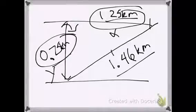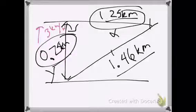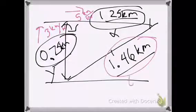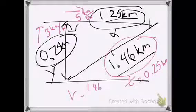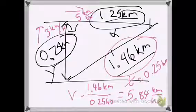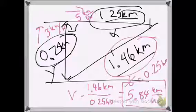Now let's look at speed. The boat has two components: three kilometers per hour going across the river and five kilometers per hour going down the river. To find the actual speed, we can take the total displacement of 1.46 kilometers divided by the time of 0.25 hours, which gives 5.84 kilometers per hour.